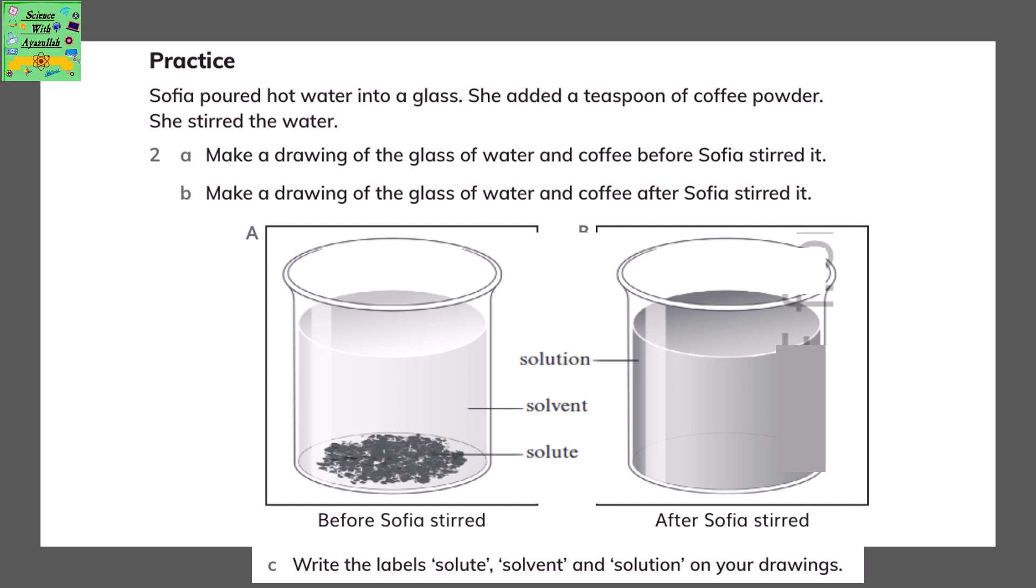Sophia poured hot water into a glass. She added a teaspoon of coffee powder. She stirred the water. Make a drawing of the glass of water and coffee before Sophia stirred it. And then make a drawing of the glass of water and coffee after Sophia stirred it.